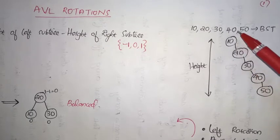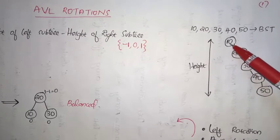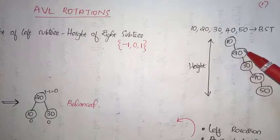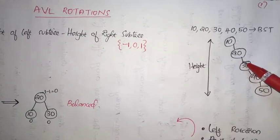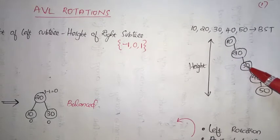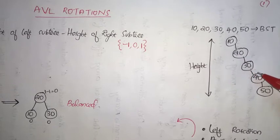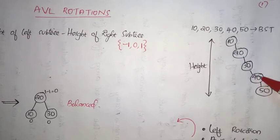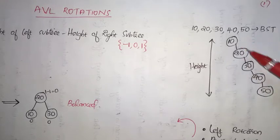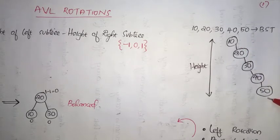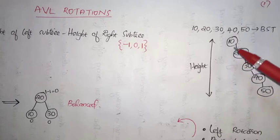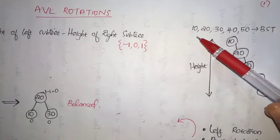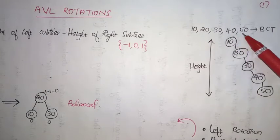Similarly, since 40 is greater than 10 it goes to the right child of 10, greater than 20 so goes to the right child of 20, greater than 30 so again goes to the right child of 30 — 40 will be placed there. Similarly 50 will also be placed at the end. So this is the binary search tree after insertion of these elements.